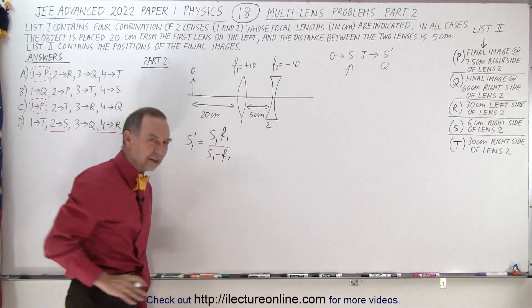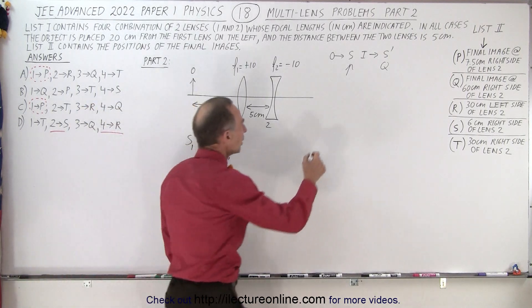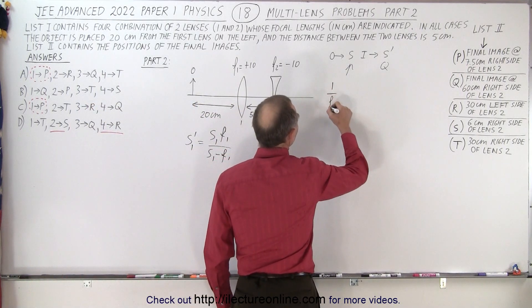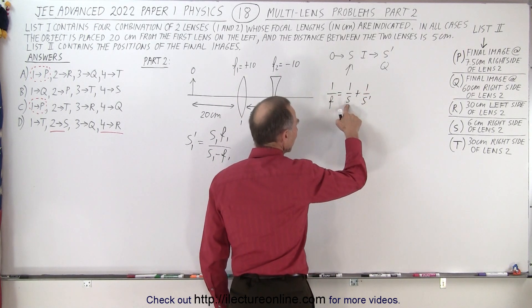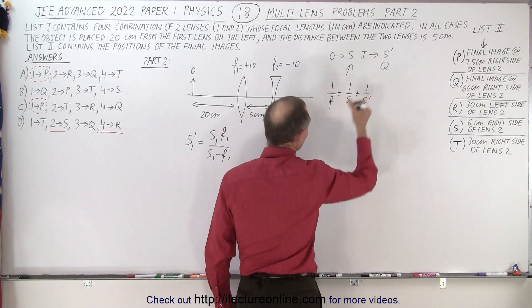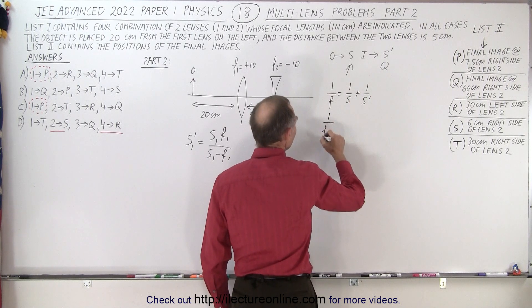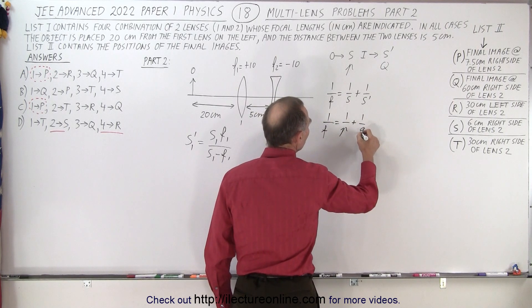Now you may wonder, well where did that come from? How do you obtain that? Well that comes from the equation where 1 over F equals 1 over S plus 1 over S prime. S being the object distance, S prime being the image distance instead of using P and Q. Of course we could use 1 over F is equal to 1 over P plus 1 over Q where P is the object distance and Q is the image distance.